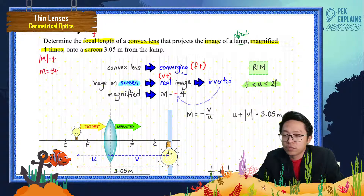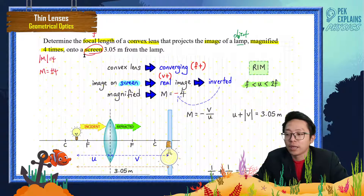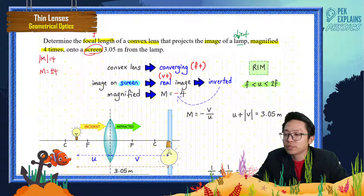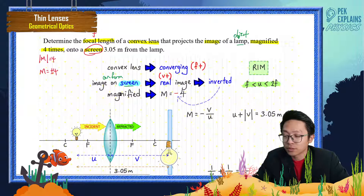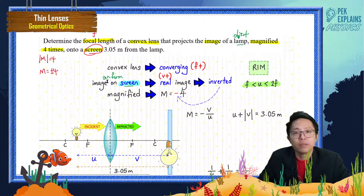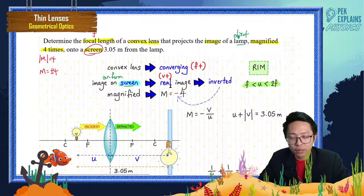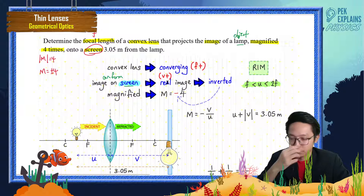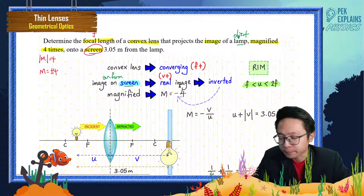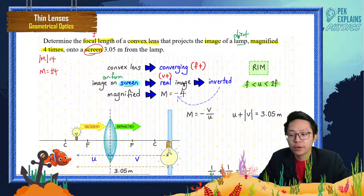The image is formed on a screen — this is very important. An image that can form on a screen is a real image. For a real image, v must be a positive value. Also, a real image must be inverted.